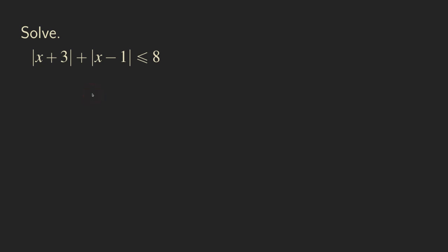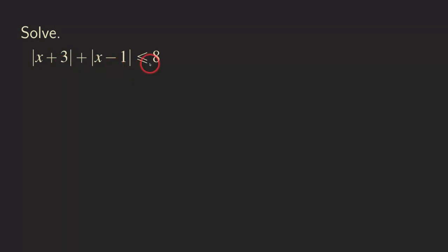Hello everyone, it's Wilson here. Today I want to solve an absolute value inequality with two absolute values. On the left side there are two absolute values and we want to sum them up, and that's supposed to be less than or equal to 8. We are finding the x that will satisfy this inequality.